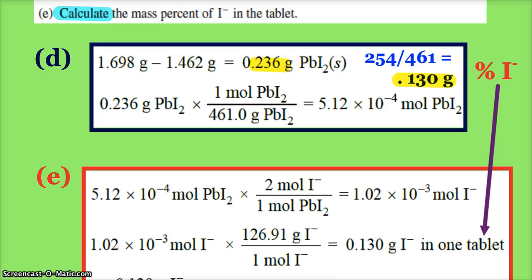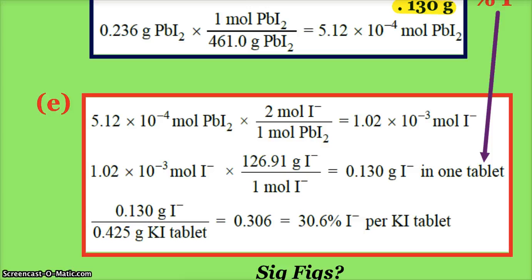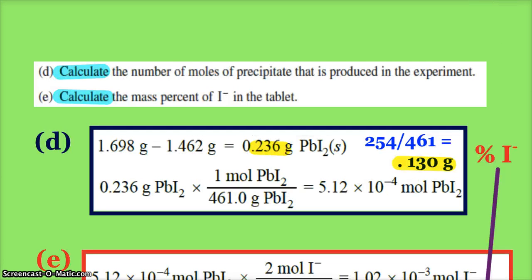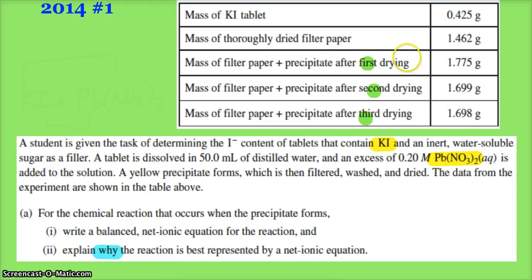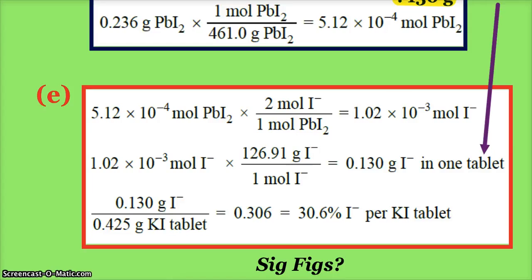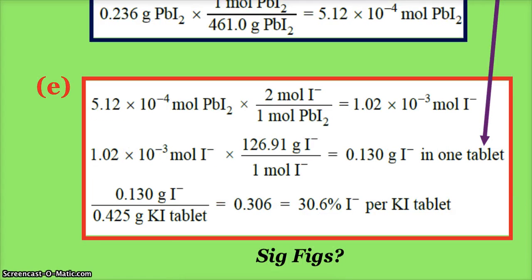But now the final step is calculate the mass percent of the iodide. So there's 0.130 grams of iodide in one tablet. Our tablet weighed 0.425 grams, and that again was up in our data table. So 0.13 divided by 0.425, and that gives us 30.6 percent iodide in each potassium iodide tablet.